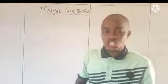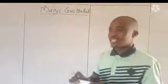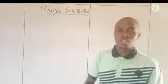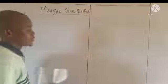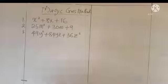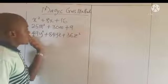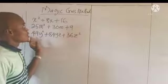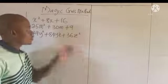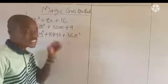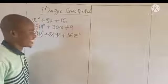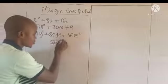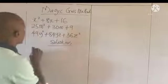We are going to be using the magic cross method to factorize any quadratic expression that is factorizable. So now let's say we have the following expressions and we are asked to factorize them using the magic cross method. So I want you to follow me and listen attentively — it's very, very sweet. Let's start from number one.